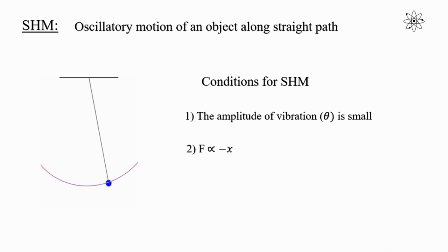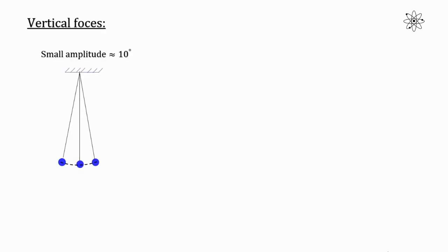Now let's understand how the simple pendulum satisfies these two conditions. Consider a pendulum displaced by an amplitude of about 10 degrees. Let l be the length of the simple pendulum and theta be the angular displacement. The tension T acts along the string towards the point of suspension, and mg acts vertically downward. Let's resolve mg into its two components.